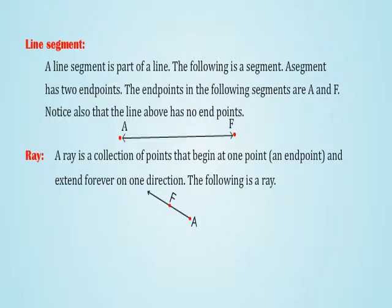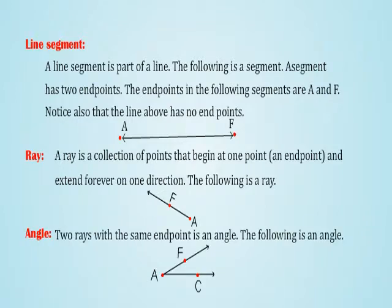Ray: A ray is a collection of points that begin at one point, an endpoint, and extend forever in one direction. The following is a ray. Angle: Two rays with the same endpoint is an angle. The following is an angle.